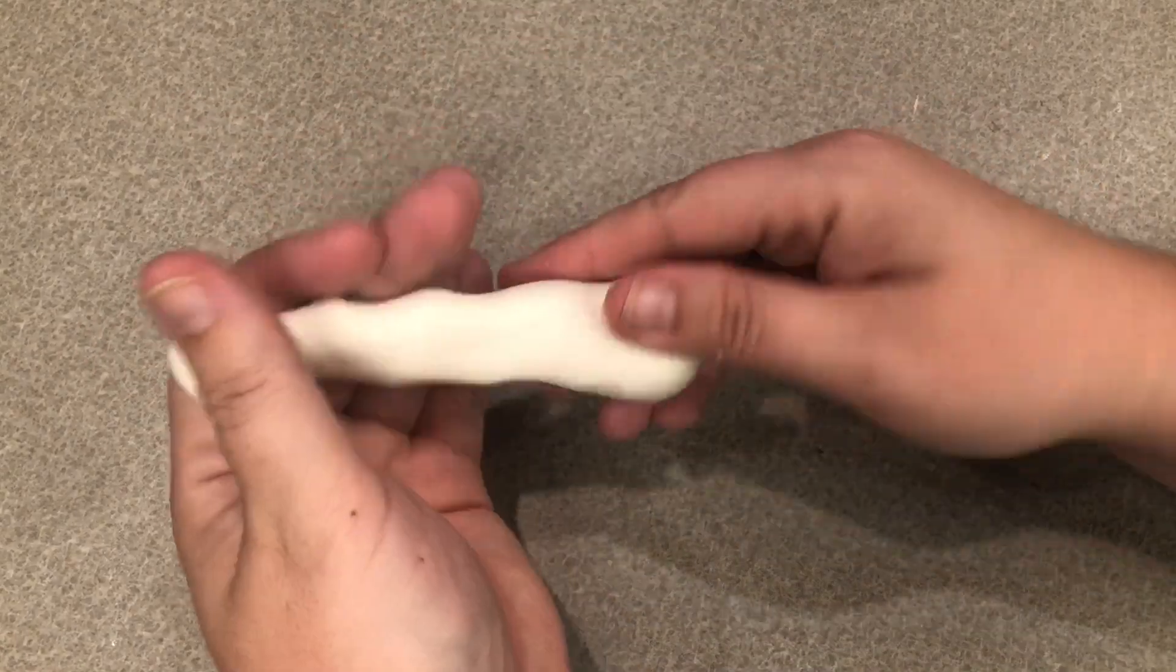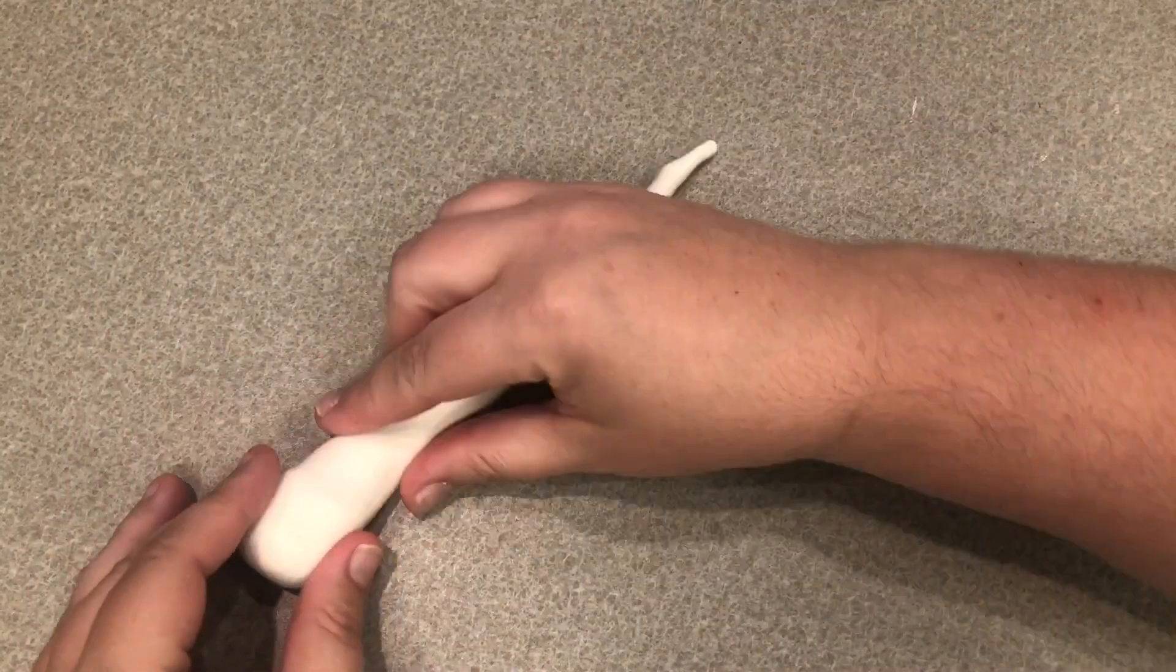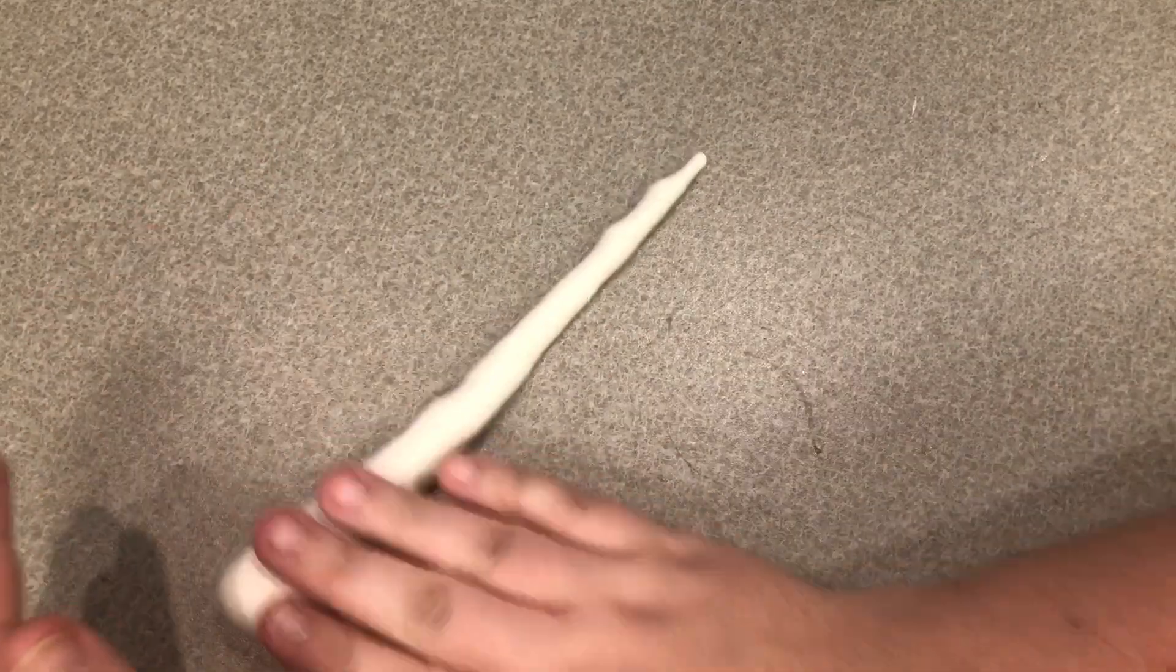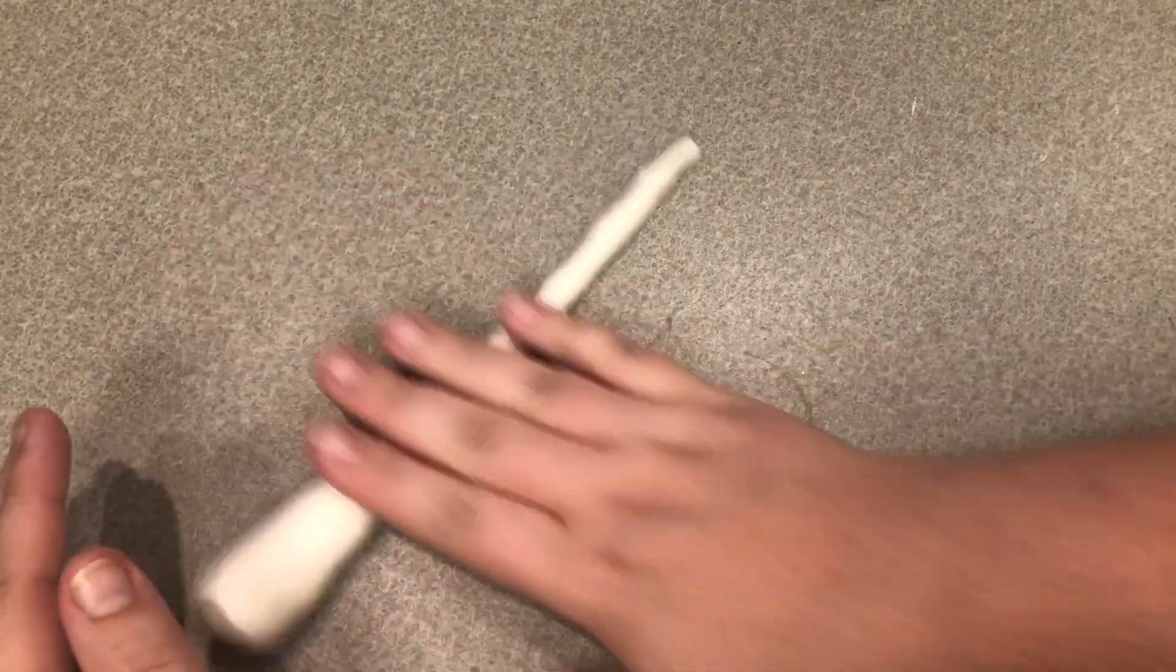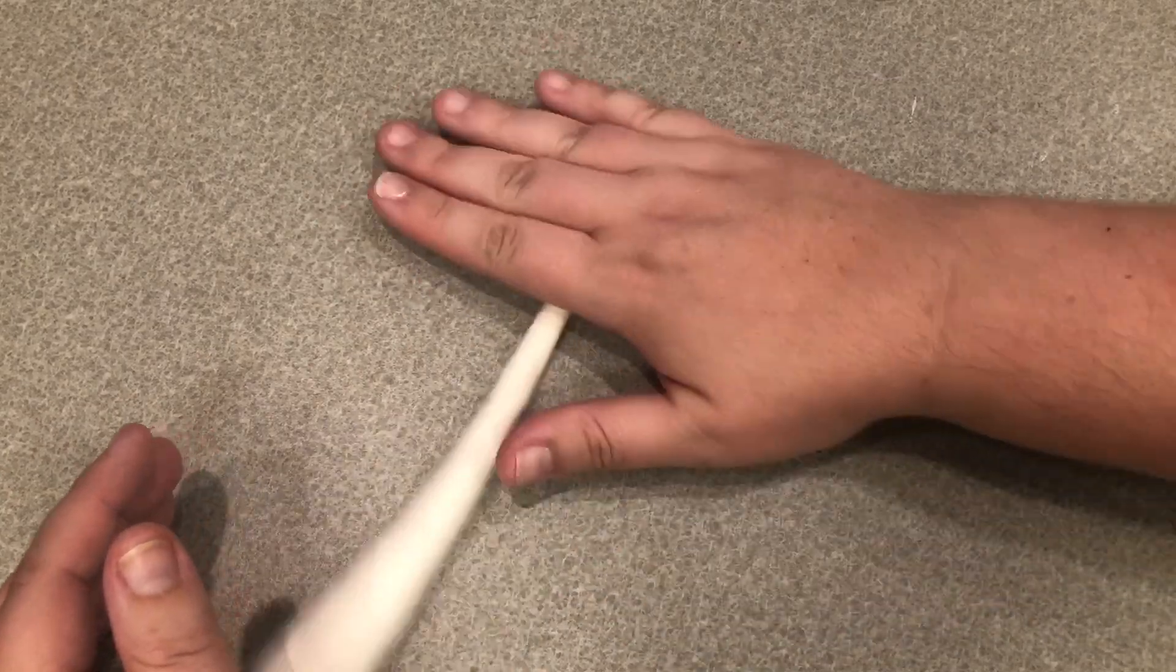Rolling it between my palms to lengthen it and then one end I want to roll to be very small. You could also roll it on the table rather than in your hands whichever way.